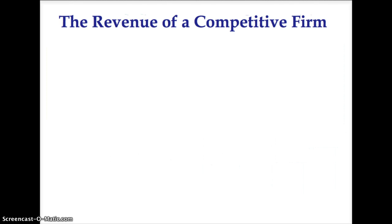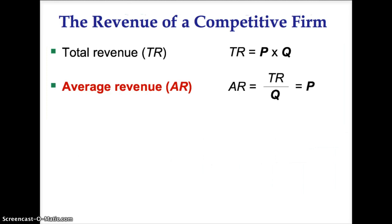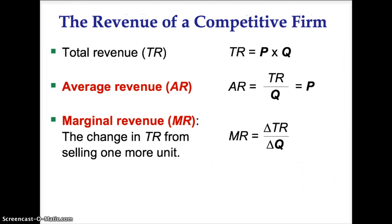Remember the following formulas from the previous chapter. Total revenue, or TR, equals price times quantity. Average revenue, or AR, equals total revenue divided by quantity, and mathematically average revenue is also equal to price. Marginal revenue, or MR, is the change in total revenue from selling one more unit. The formula for marginal revenue is the change in total revenue divided by the change in quantity.